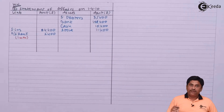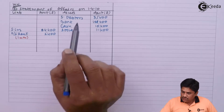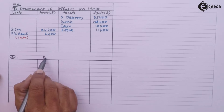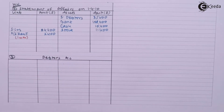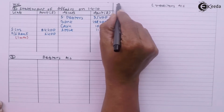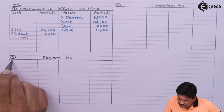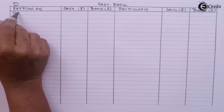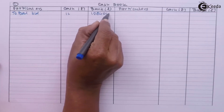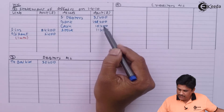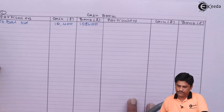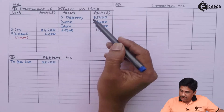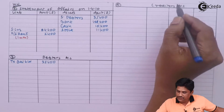All these opening balances I will enter in my current accounts accordingly. I am posting to various accounts: debtors — I have to prepare the cash book, I have to prepare the creditors account. There are no bills receivable or bills payable accounts. Debtors I am writing as opening balance, and bank and cash we will write in our cash book. Stock 11,400 will be our opening stock.